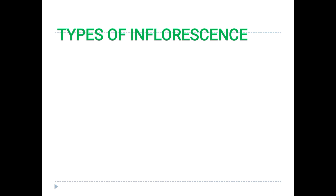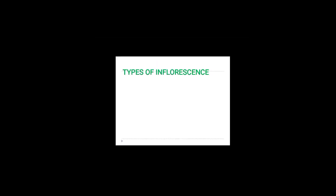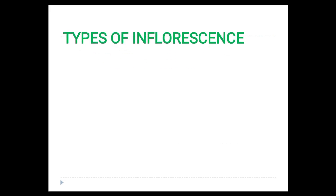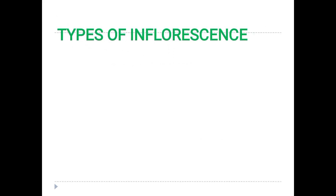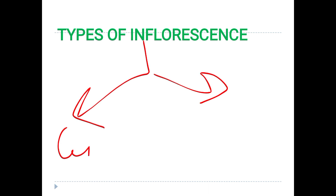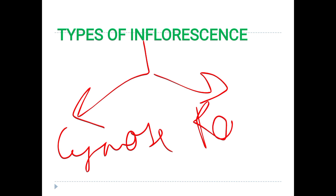Now we have the types of inflorescence. There are two types of inflorescence: one is cymose and the second one is racemose.